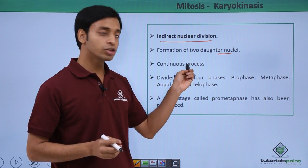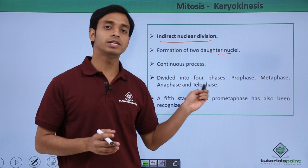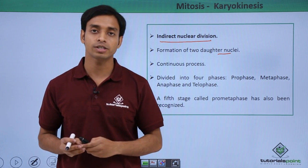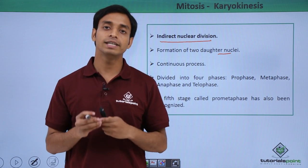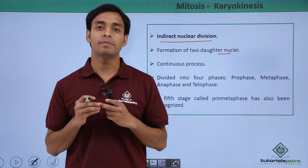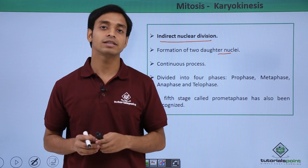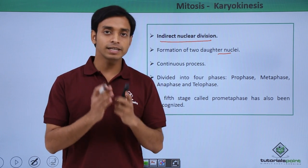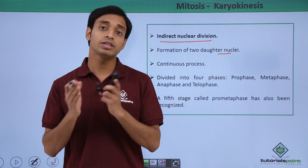The process of karyokinesis has been subdivided into four major phases. These are: prophase, followed by metaphase, followed by anaphase, and lastly telophase. In certain kinds of cells, a fifth stage